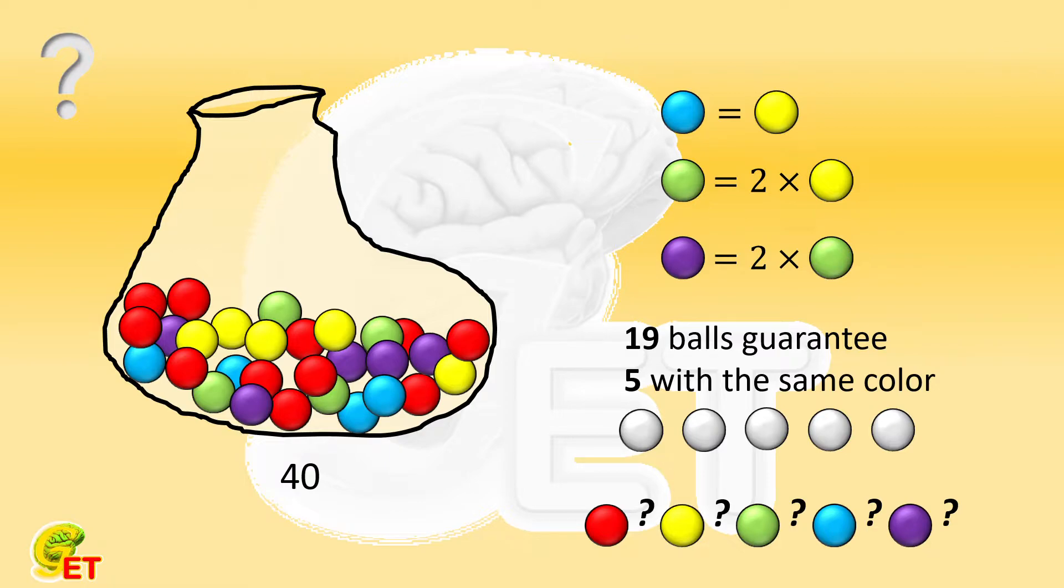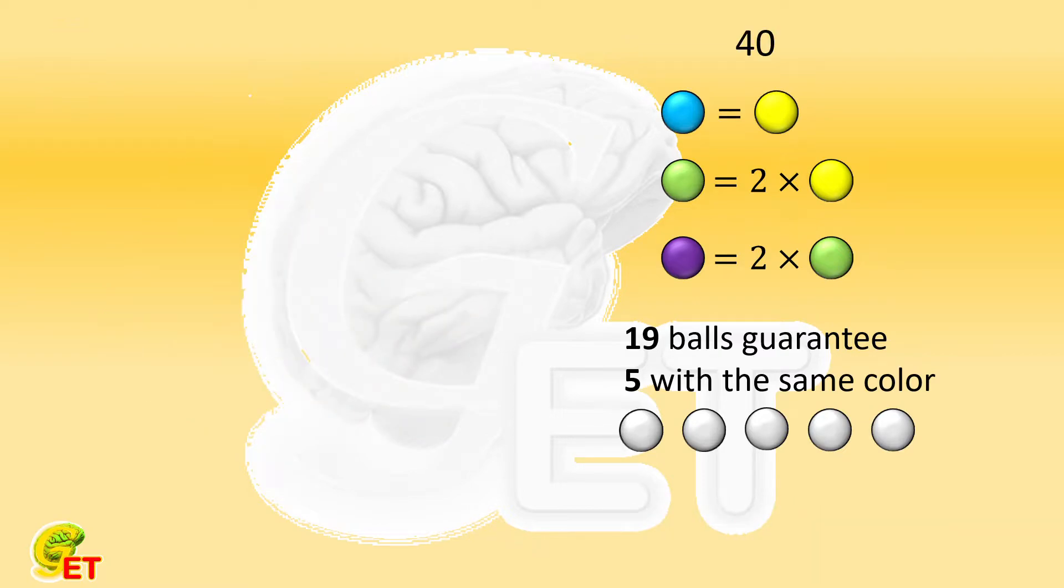There are 3 sets of conditions that are known. Let's re-summarize them. First, the total number is 40.